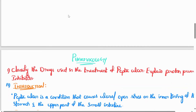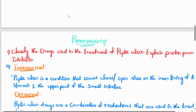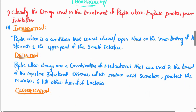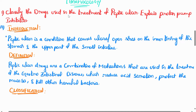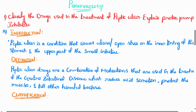We have an essay question here. The question is: classify the drugs used in the treatment of peptic ulcers, and explain proton pump inhibitors. This is a 15-mark question from previous papers. We have to present the answer to this question.